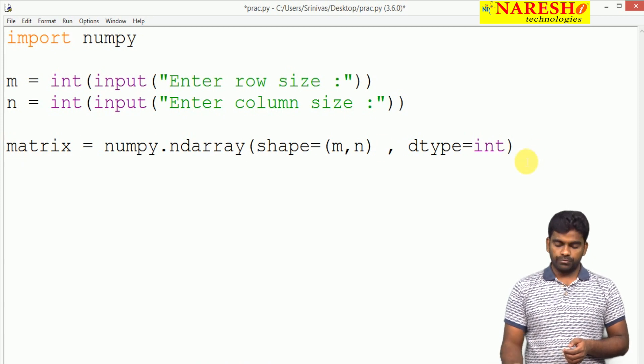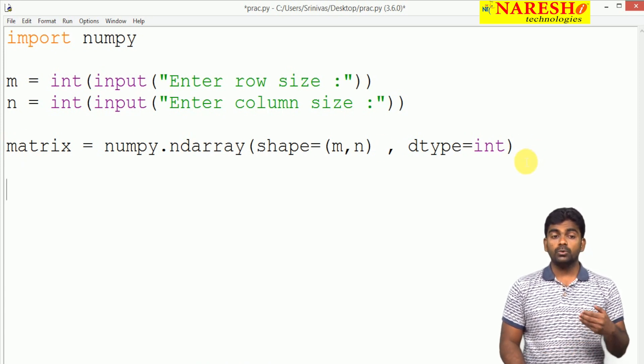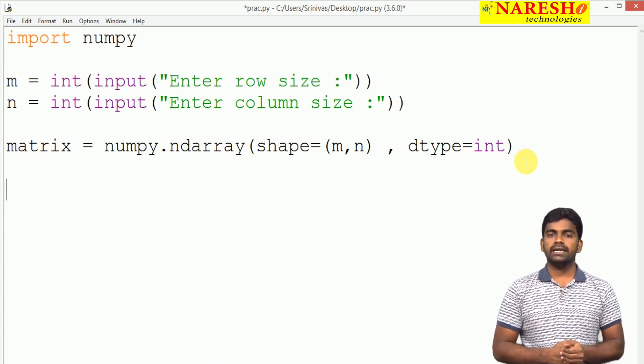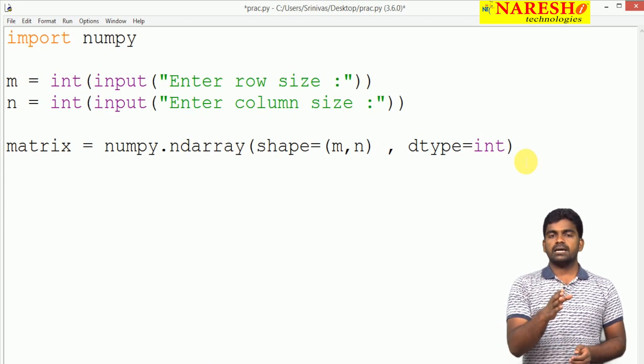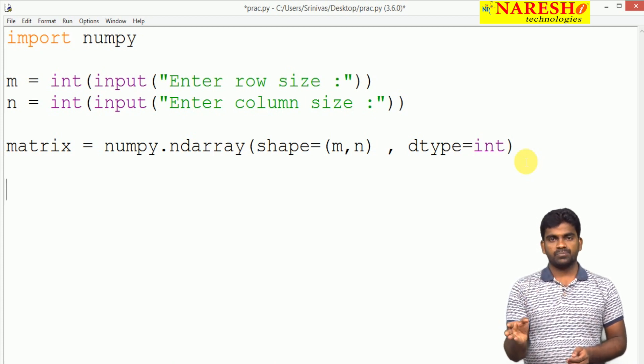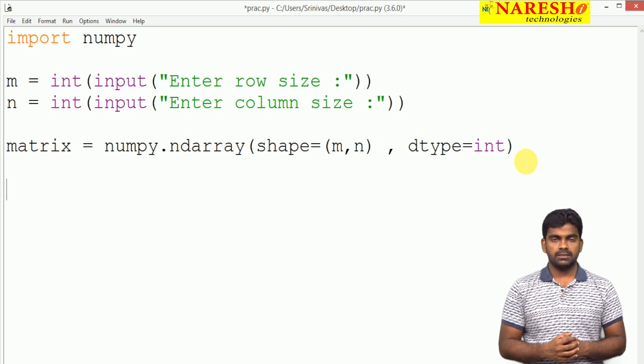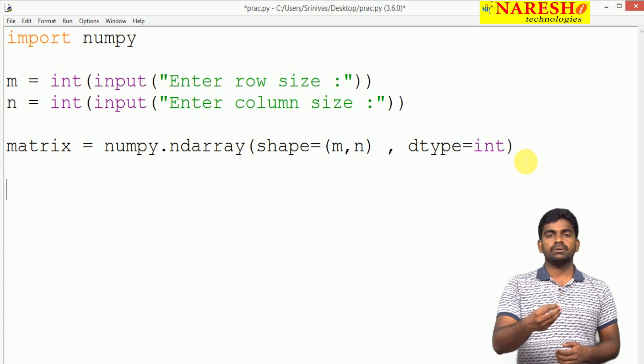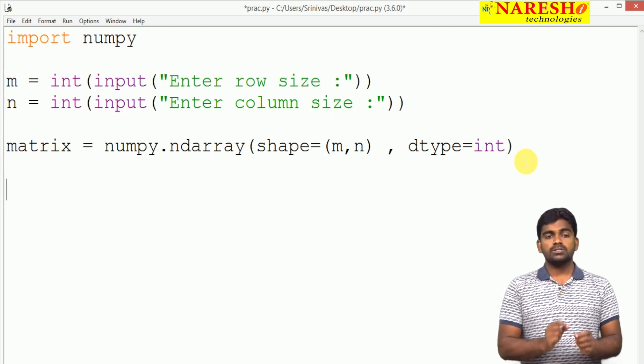How many number of elements do I want to read? I want to collect the input from the end user. For example, if number of rows are 3 and number of columns are 3, it is a 3 by 3 matrix. Total number of elements are 9 elements. Simply the size.